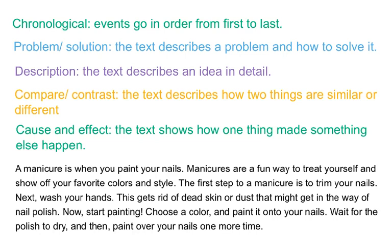In a description text, the text goes into detail about one idea or concept. In a compare and contrast text, the text describes how two things are similar or different. And in a cause and effect text, it shows how one thing makes something else happen.